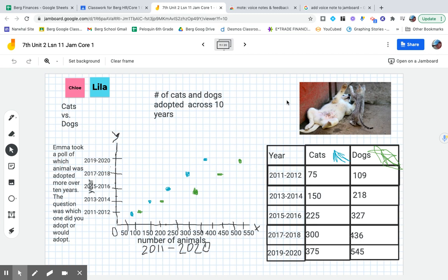But then we have Chloe and Mila who compared cats and dogs. Emma took a poll of which animals were adopted more over 10 years. The question was which one did you adopt or would adopt. And so you can see the number of animals on the x-axis and the years is on the y-axis. So I'm asking you guys to figure out, is there a K value, and if so, what is it?